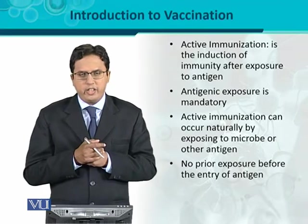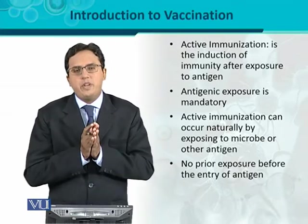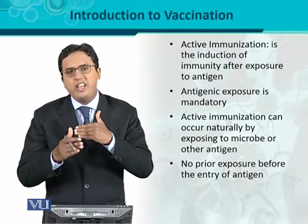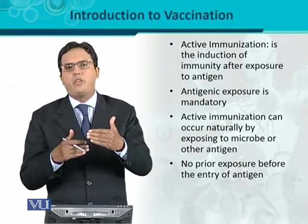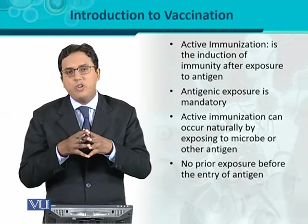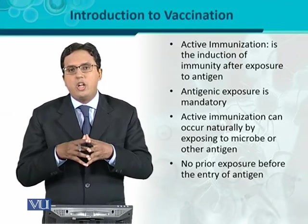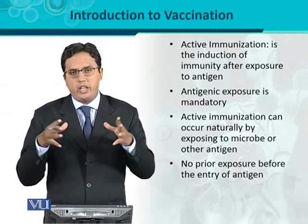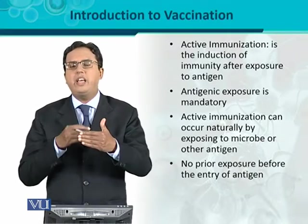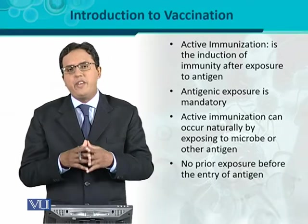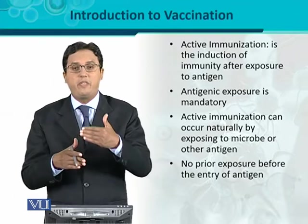It is important regarding active immunization that there should be no prior exposure to the antigen before its entry. If there has been prior exposure, the immune system would already have been activated. For example, in the case of infants, antigen exposure is much less compared to adults. So there is no prior experience of being exposed to an antigen, and whenever they are exposed to the antigen for the first time, they will develop an immune response against such antigens or pathogens.